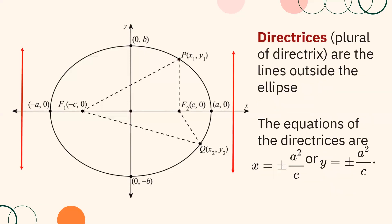Directrices — the plural of directrix — are the lines outside the ellipse. The equations of the directrices are shown on screen.